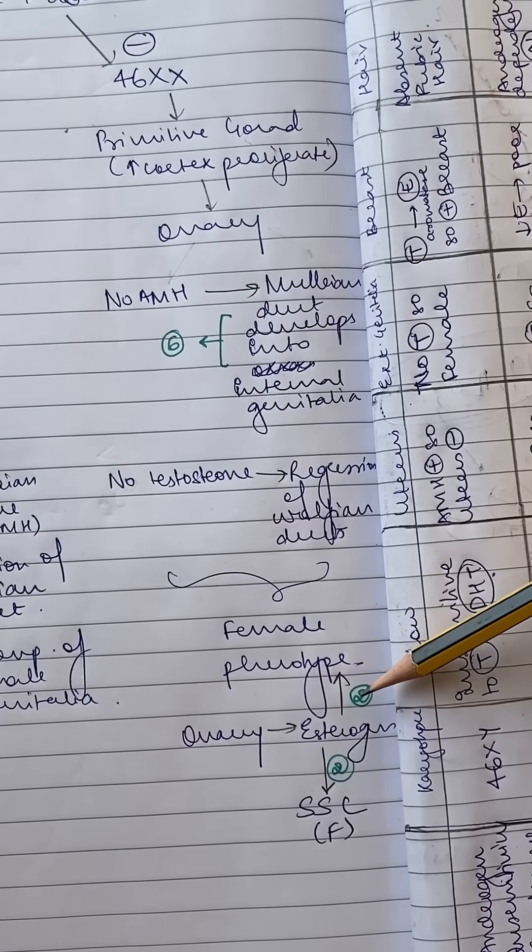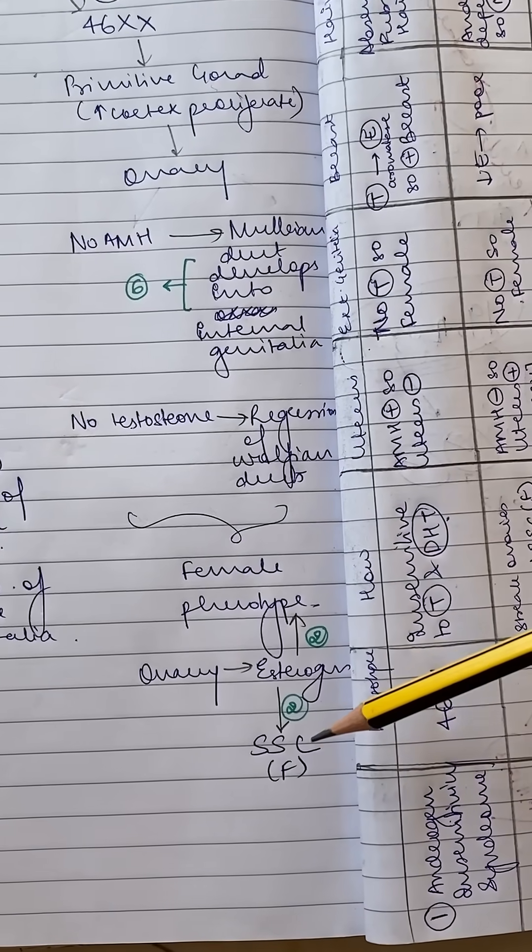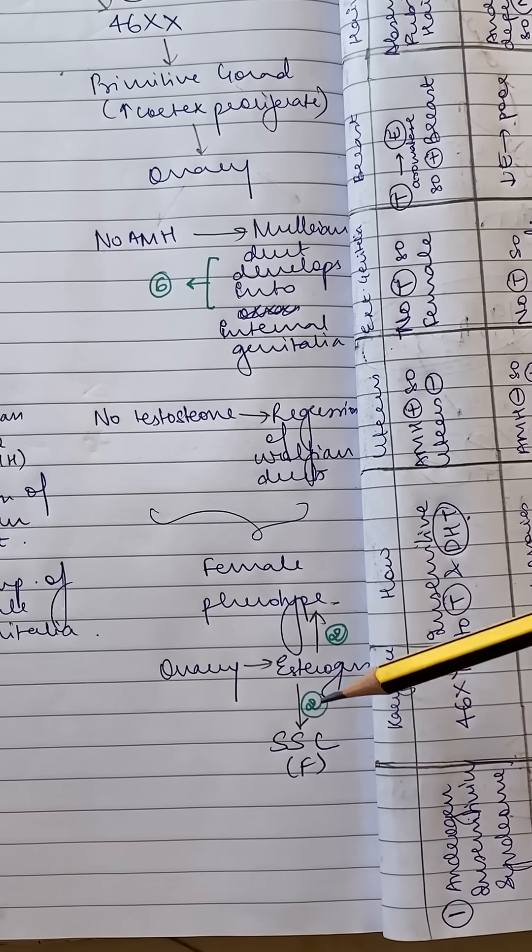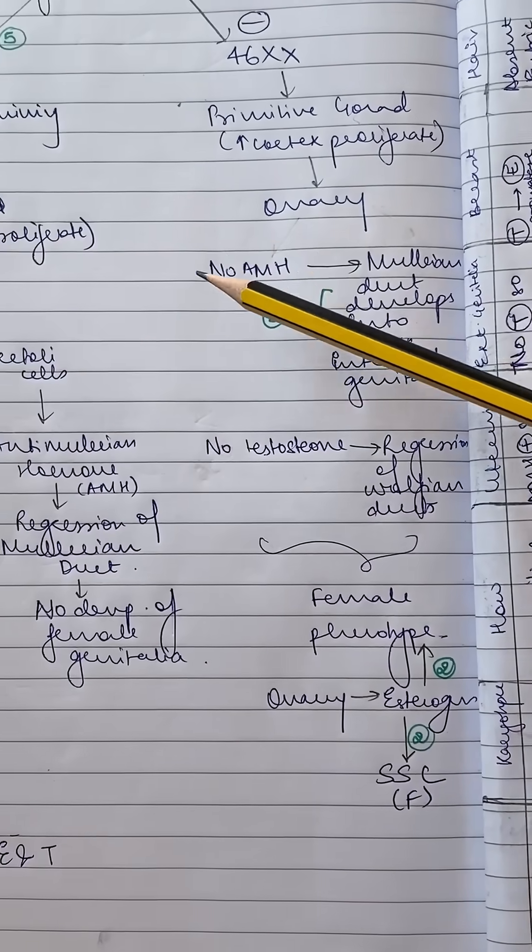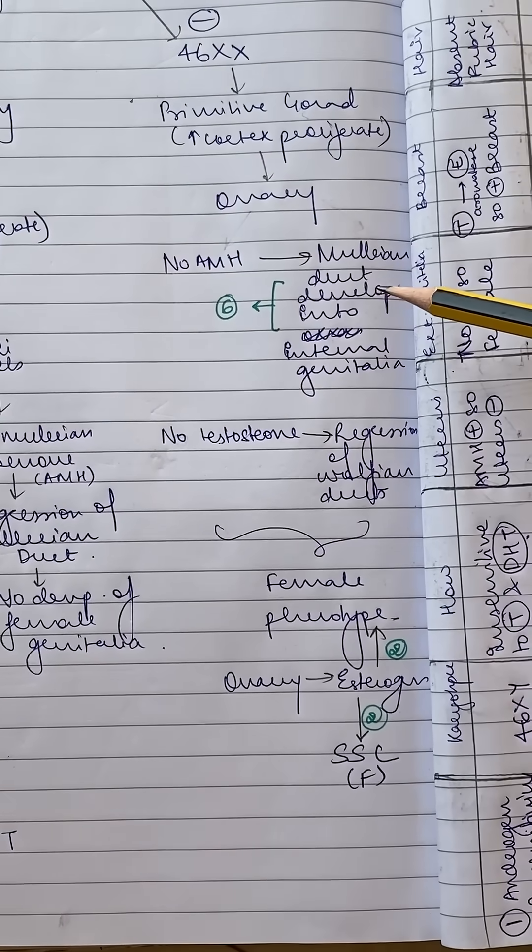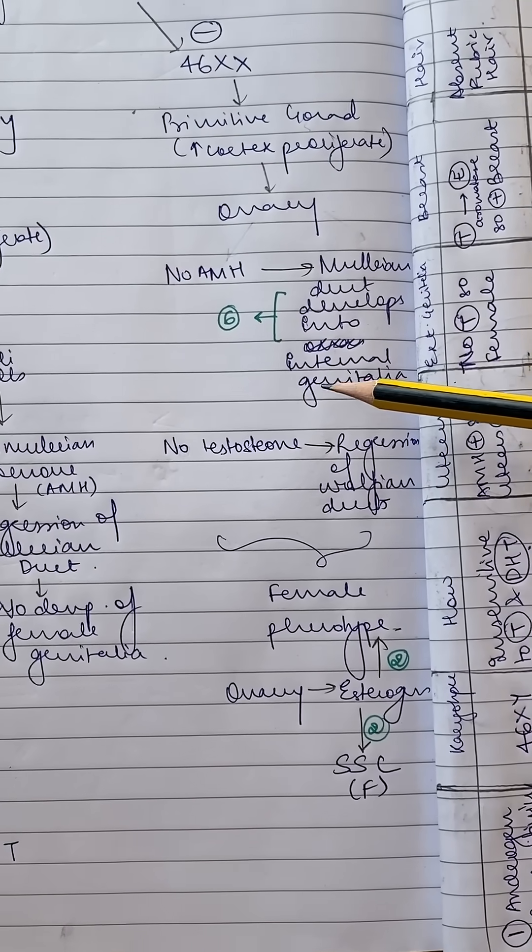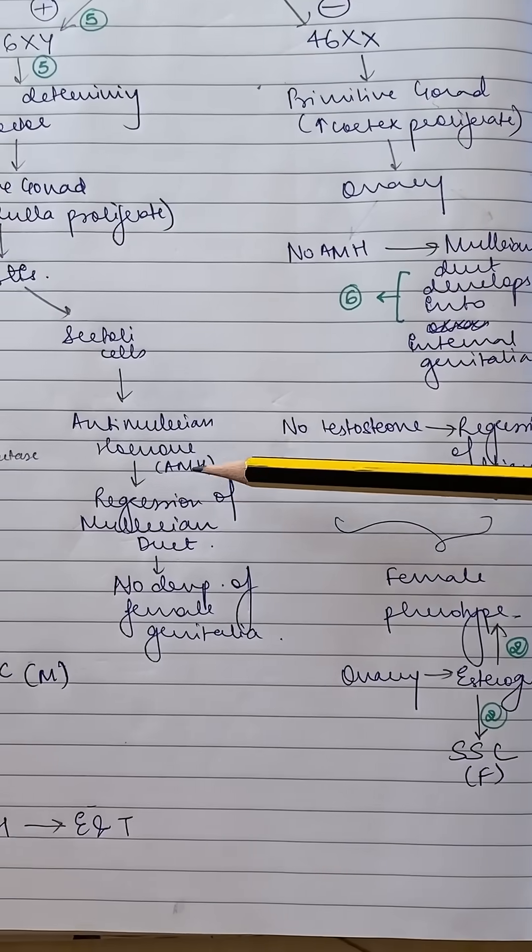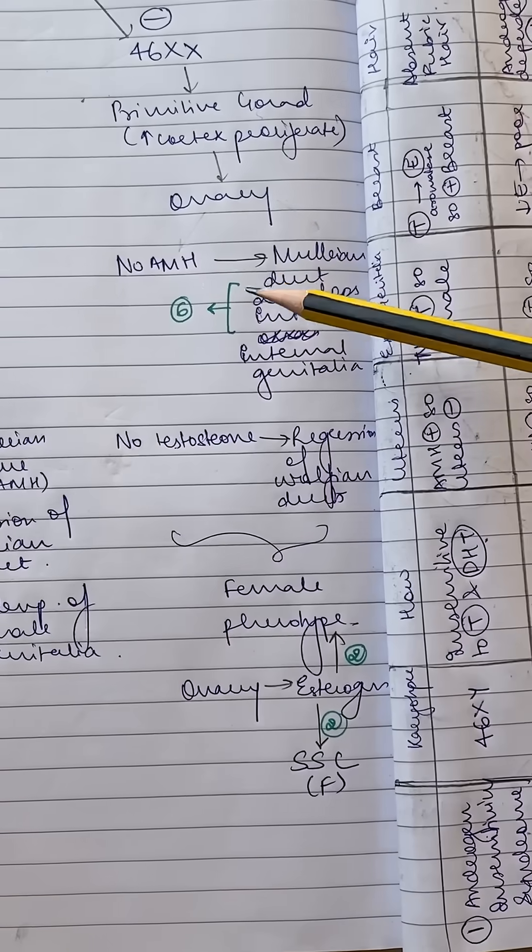Ovaries release estrogen. Estrogen provides a female phenotype and also provides the secondary sexual characteristics in females. Now since there is no AMH, there are no Sertoli cells and there is no AMH, so the Müllerian duct will develop into the female internal genitalia. Here the Müllerian duct is being inhibited but here it is not.